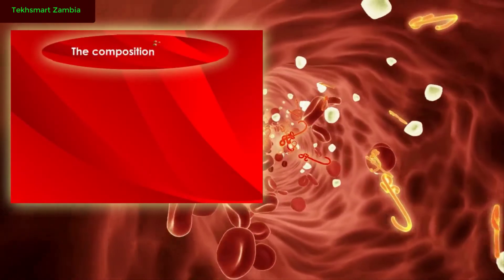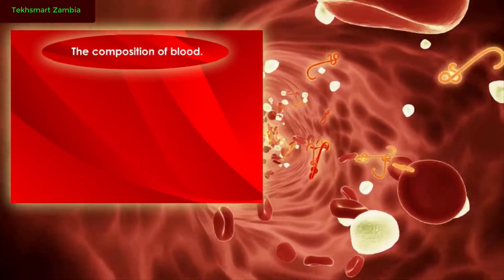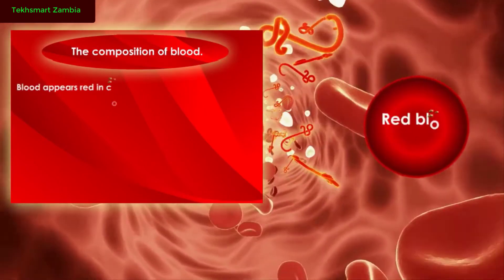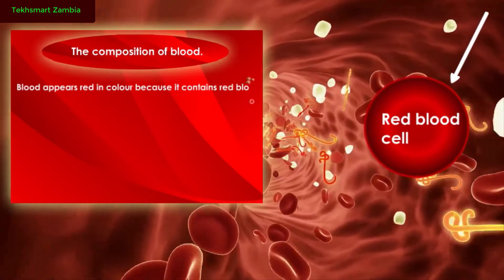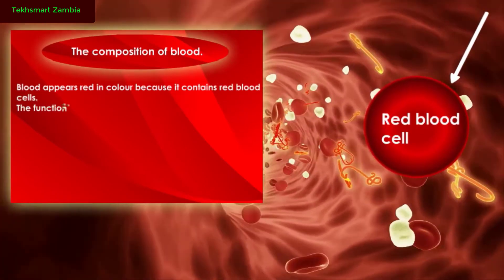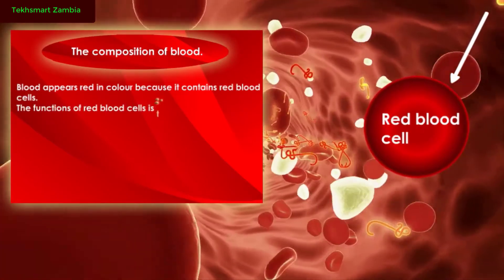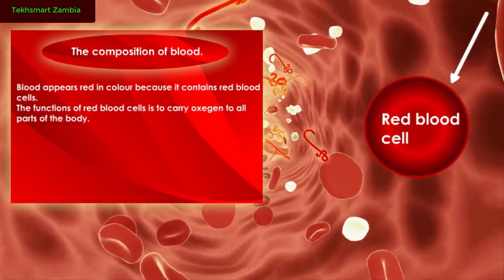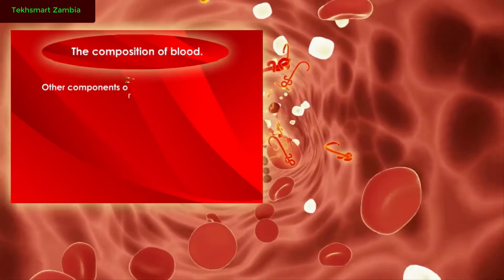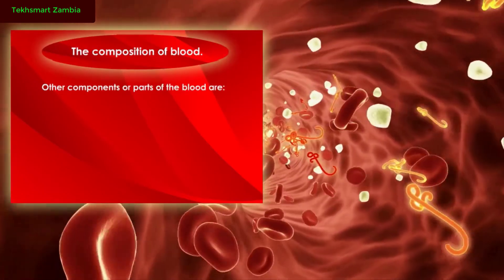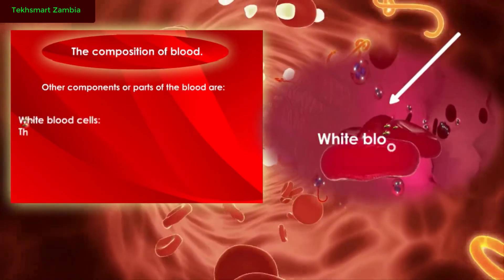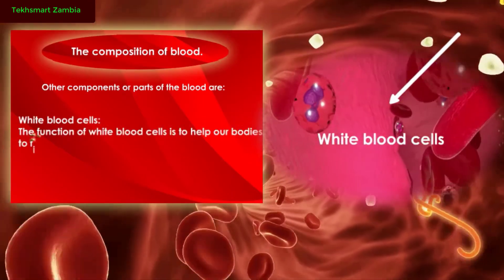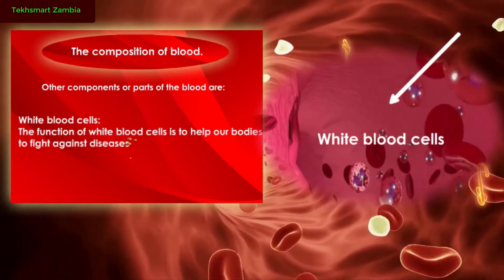The composition of blood. Blood appears red in color because it contains red blood cells. The function of red blood cells is to carry oxygen to all parts of the body. Other components or parts of blood are white blood cells. The function of white blood cells is to help our bodies fight against diseases.